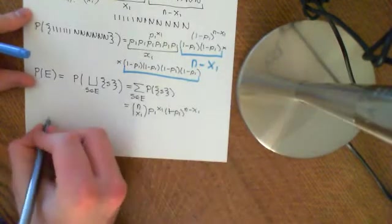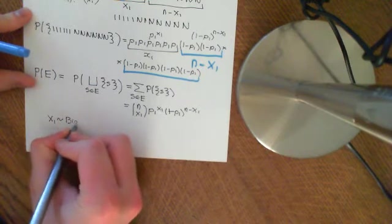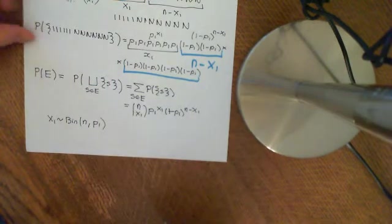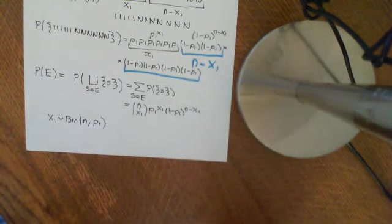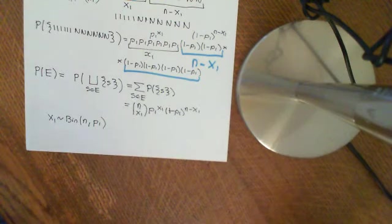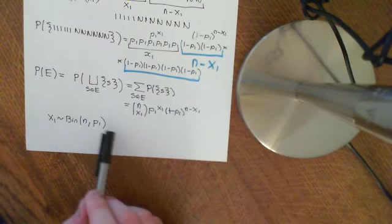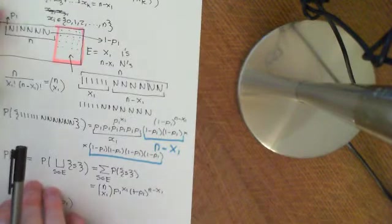So what we have found is that x1 has a binomial probability mass function — binomial with number of trials n and probability of success p1. You just view the outcome going into basket 1 as a success, and not going into basket 1 as a failure. This is far easier than trying to do the great big sum we'd have gotten just by following formulas.